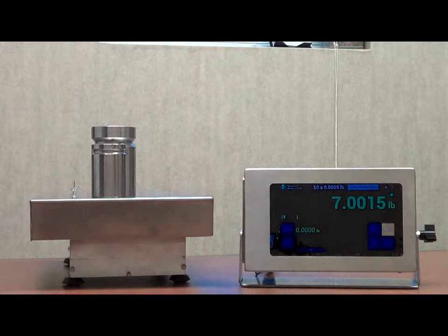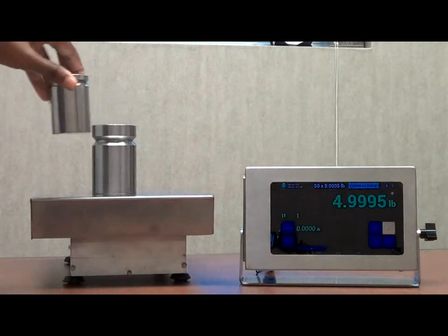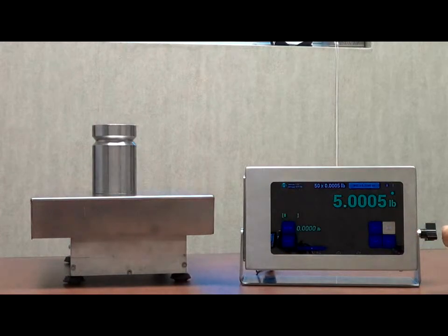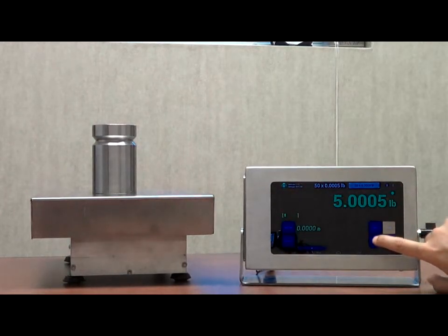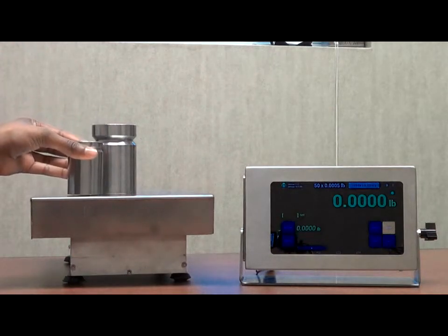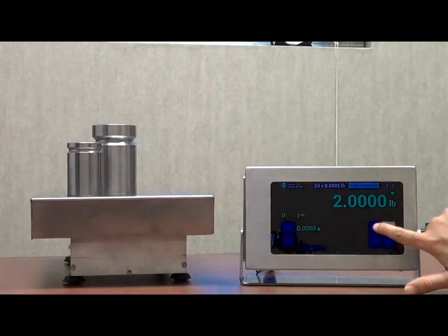The scale also has a tare function wherein we can show weights of certain items. We're going to go ahead and tare out the weight that's on there now. So now it's not registering the weight that's already there. We are going to place the smaller weight back on here. You'll see it's stabilized and it's showing the weight. There is a net gross switch which will allow us to see the complete amount as well as the tared out amount.